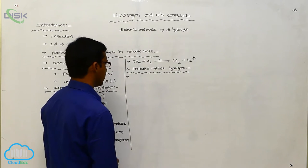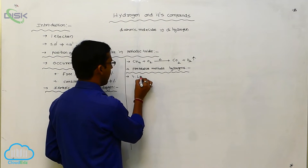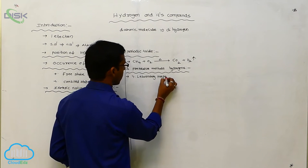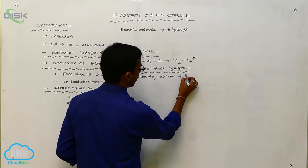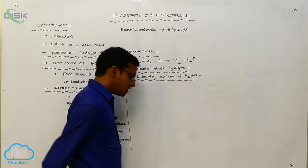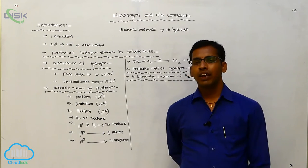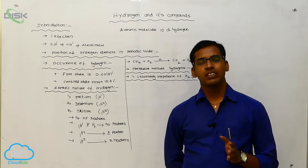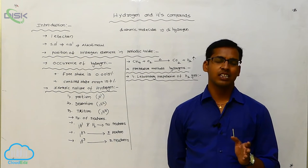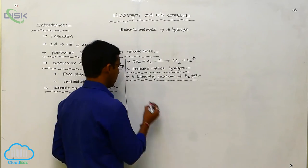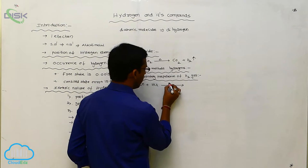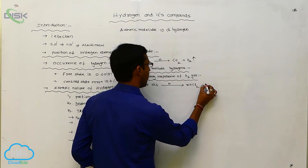Now, the preparation methods of hydrogen. The first is laboratory preparation. Hydrogen gas is prepared in the laboratory when metals react with dilute acids — it liberates hydrogen gas. For example, zinc metal reacted with hydrogen chloride through heating gives zinc chloride and hydrogen gas.